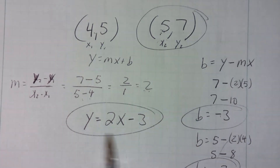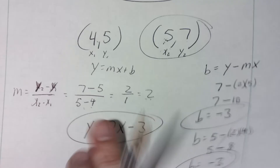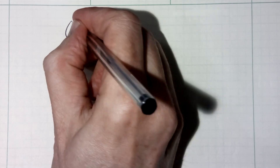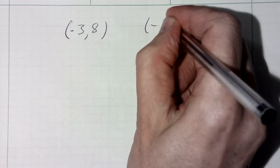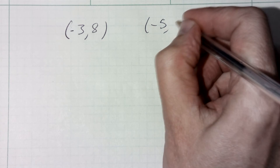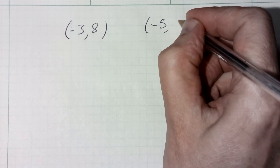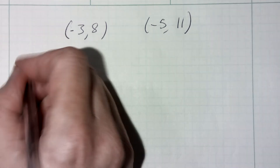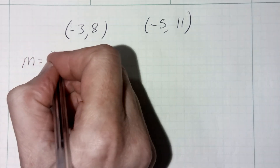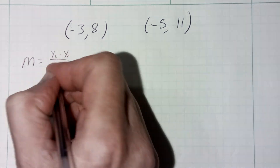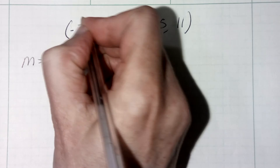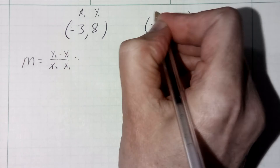So y equals two x minus three. Now these don't have to be easy, and you need to learn to not panic when you see fractions. Let's do one more with points negative three, eight and negative five, eleven. First thing, I'm going to find my slope m by doing y2 minus y1 over x2 minus x1. This is x1, y1 and this is x2, y2.